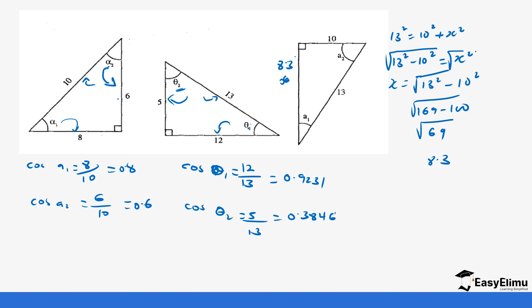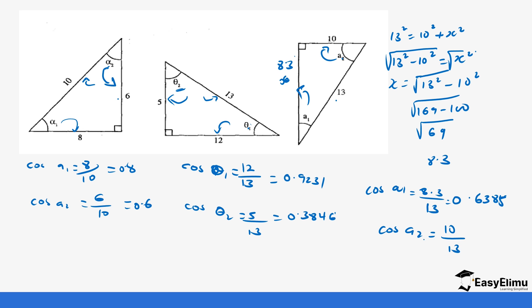So this side is 8.3. The cosine of alpha 1 is adjacent over hypotenuse, so it's 8.3 divided by 13, which gives us 0.6385. The cosine of alpha 2: the adjacent is 10 over the hypotenuse 13 — notice how different this is from sine — which gives us 0.7692. That's how we calculate the cosine of angles.